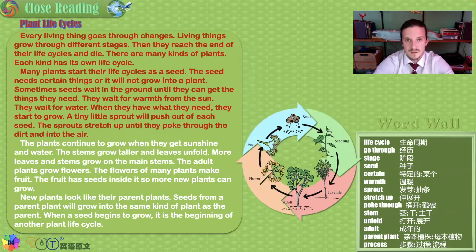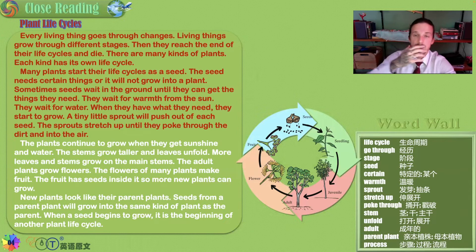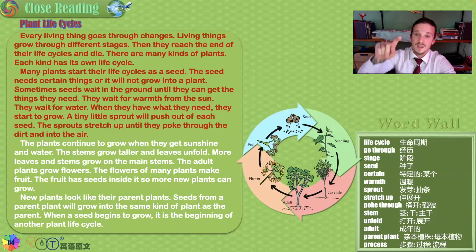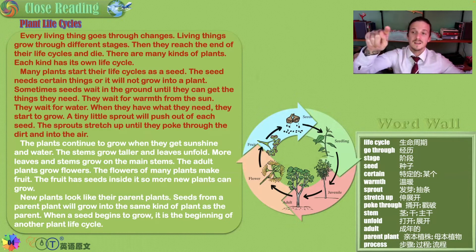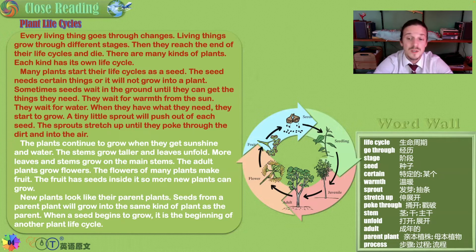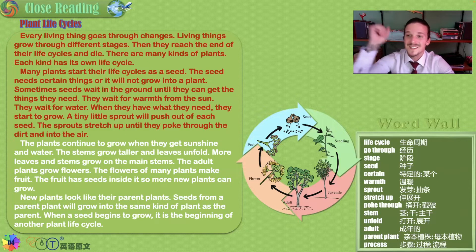We can talk about the life of any living thing in a cycle, because that is how our universe works. Think about us — we are born children, young adults, adults, then old age. In that time, maybe we give birth to new children, and then we pass on, and those children begin again. Here we are looking at a plant: it starts as a seed, grows into a seedling, becomes a juvenile, then an adult. The adult produces flowers, which come from fruits that give us more seeds.